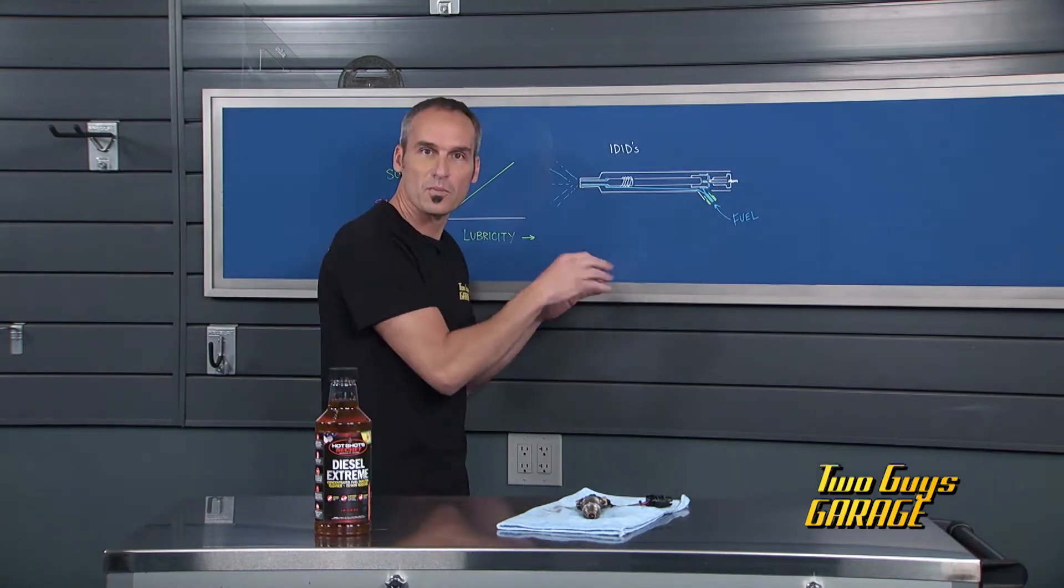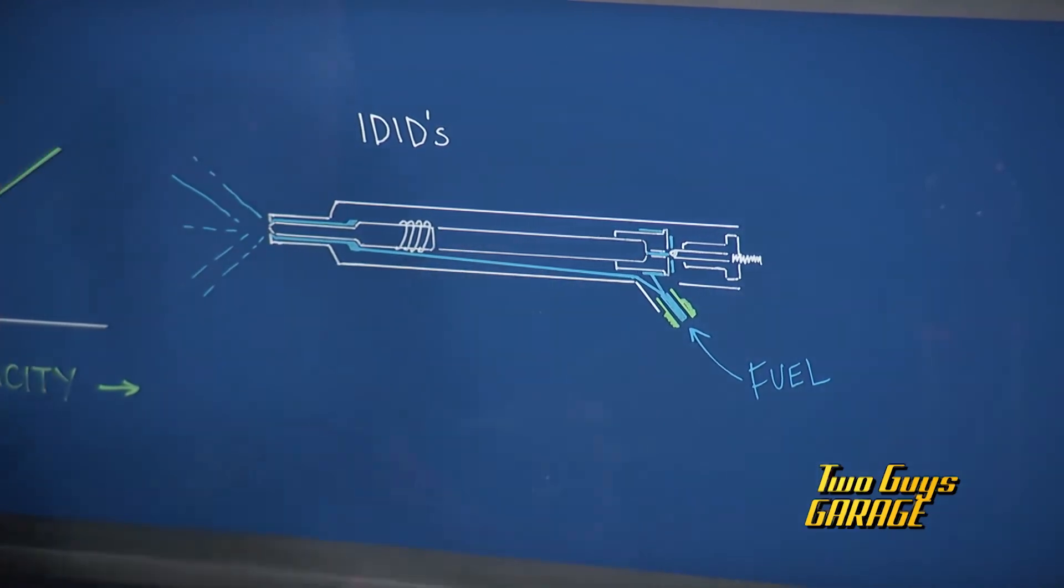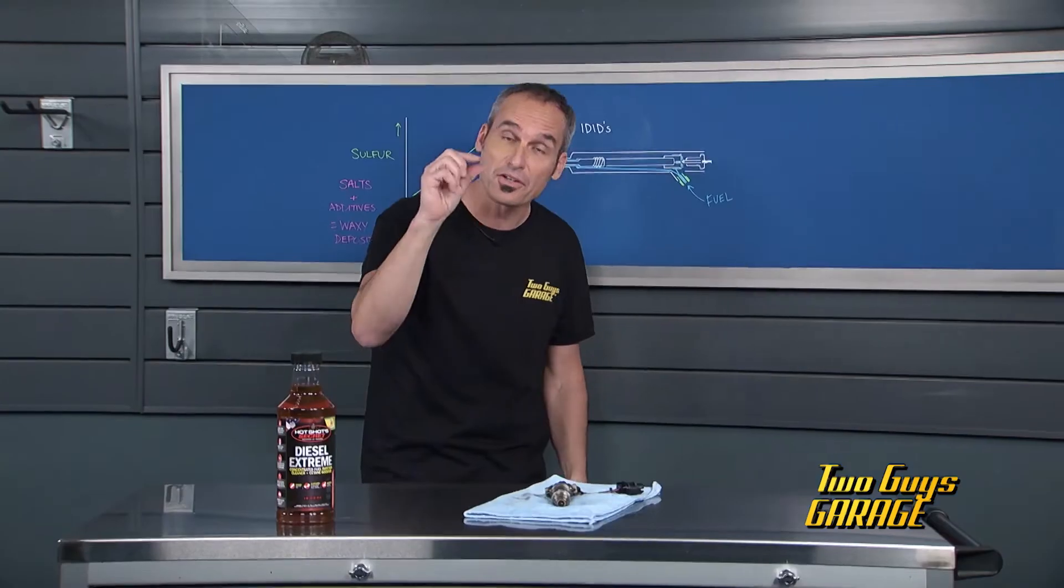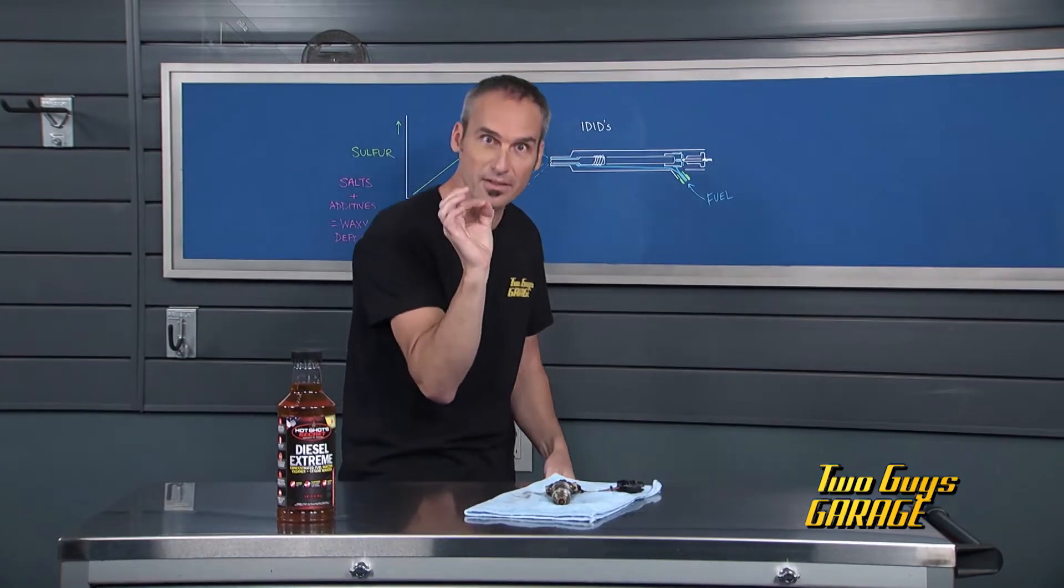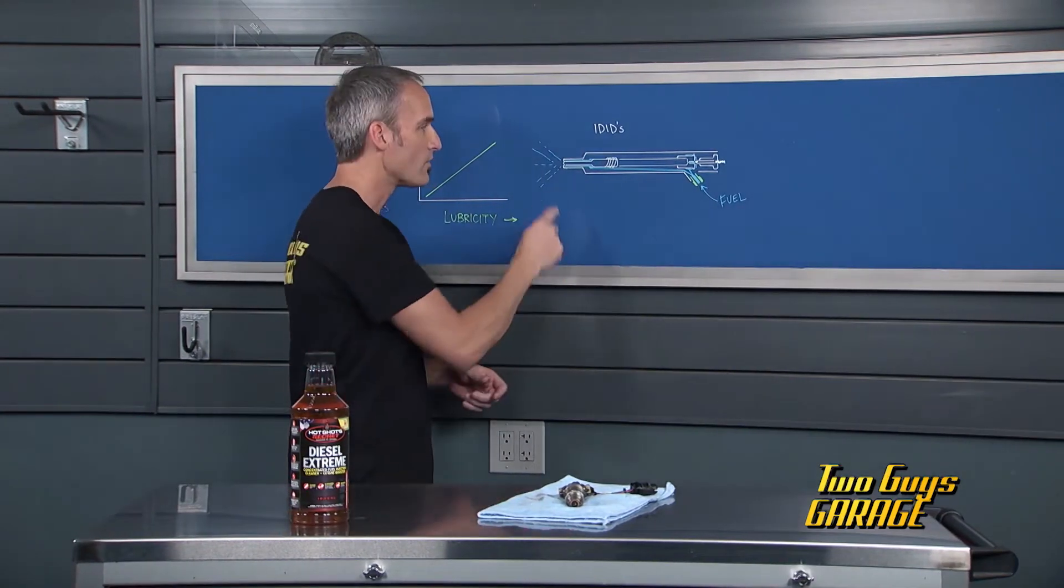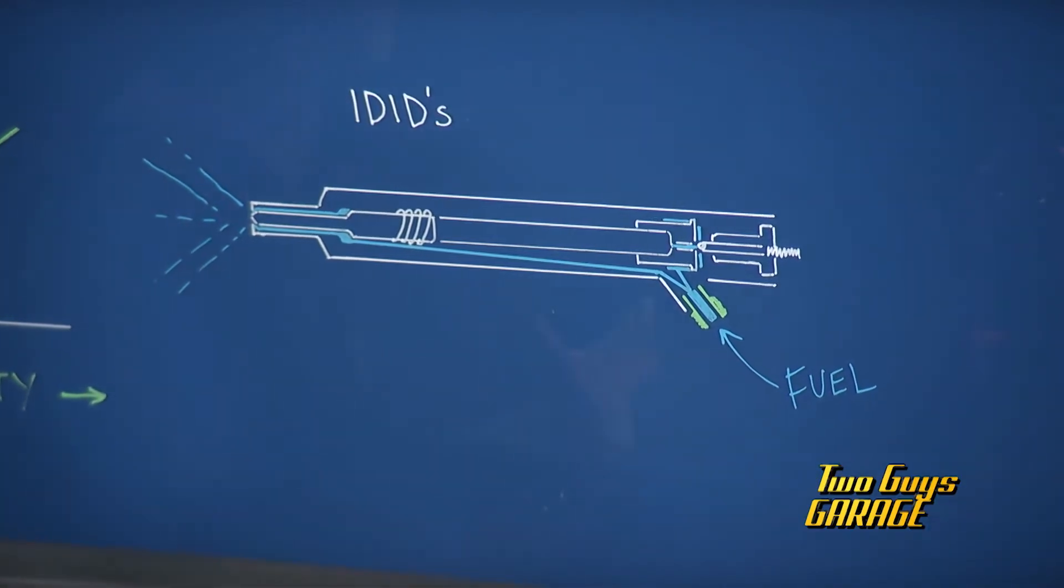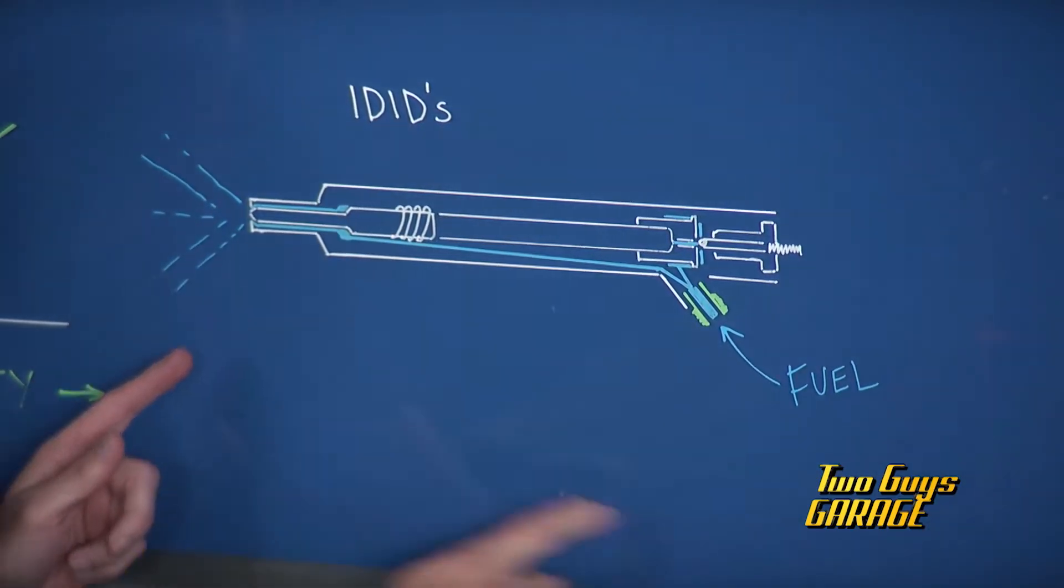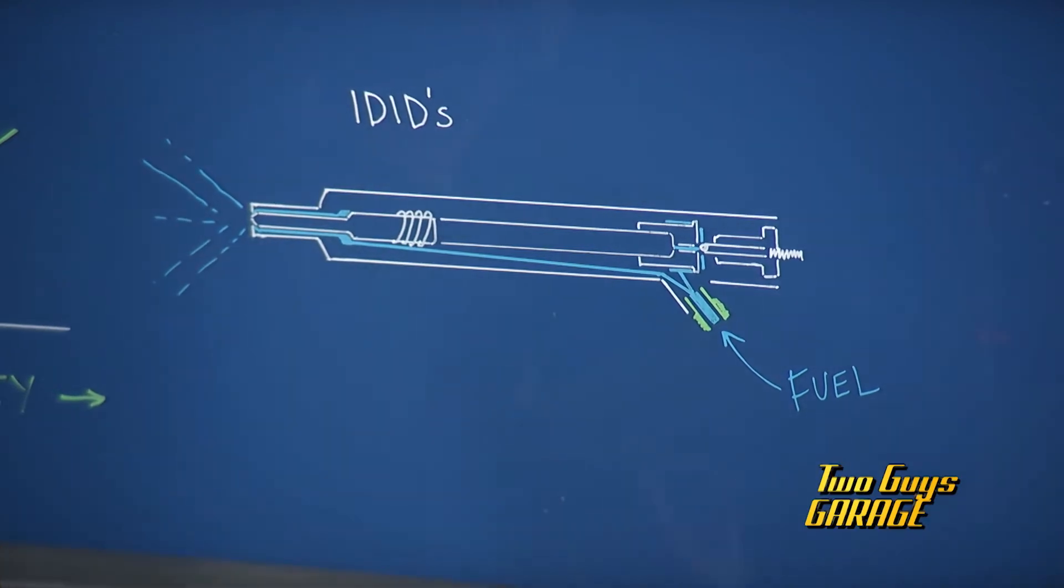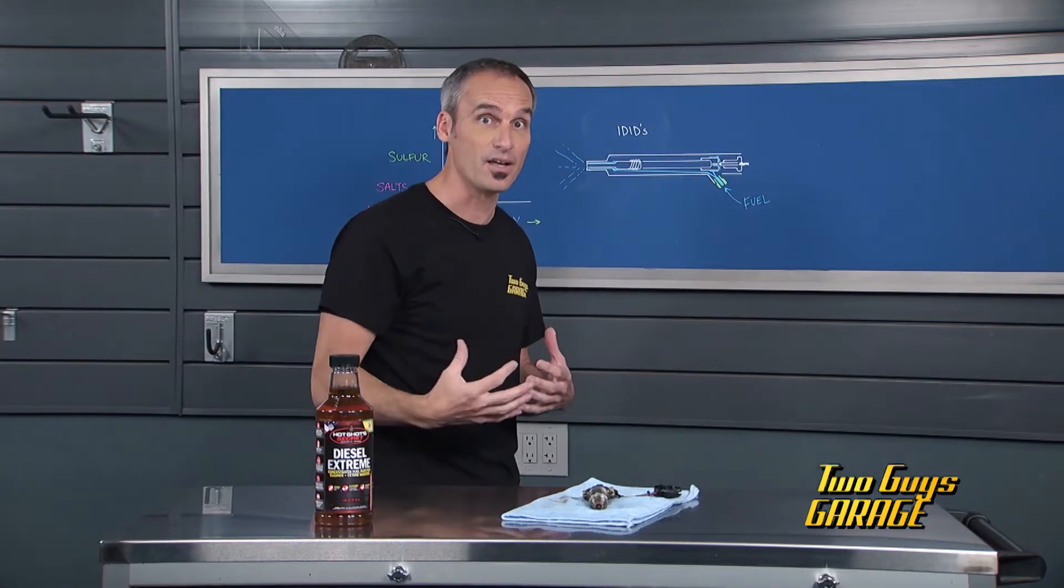This is one of the more precision elements inside your engine, with some of these clearances in here down in the microns - that is fractions of fractions of a hair thickness. Very tight tolerances, and these things take a lot of abuse from this end, being where the fuel comes out in the combustion system, sees all that heat and pressure, and on this end where the fuel goes in, with these common rail systems creeping on 30,000 PSI of fuel pressure.